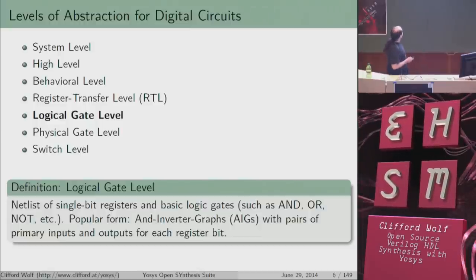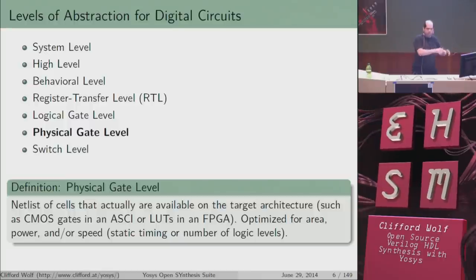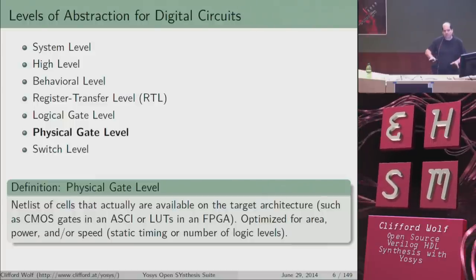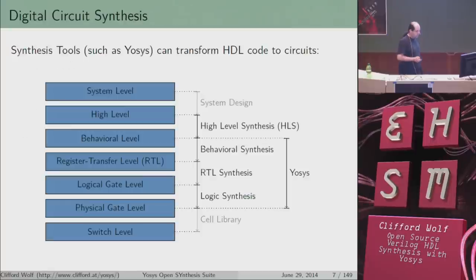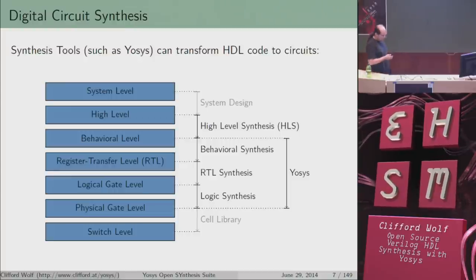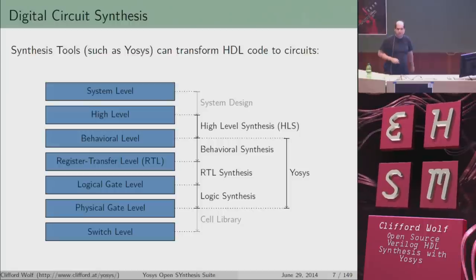The last step interesting for users is the step from logical gate level to physical gate level, where we look at how to map logical functions to the physical world of our target architecture. This step — from the behavioral level with a VHDL or Verilog design down to a physical gate level with gates available on the target architecture — is the step you can automate using a synthesis tool like Yosys.